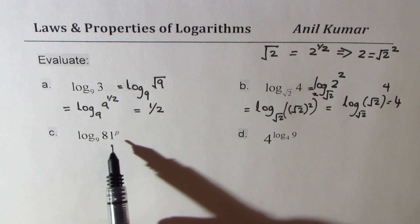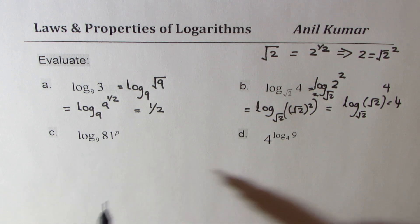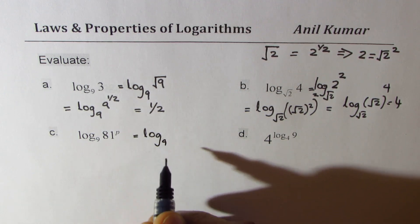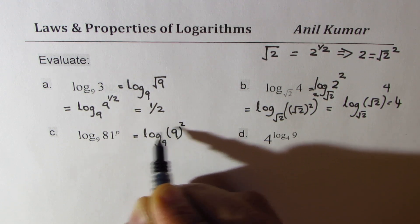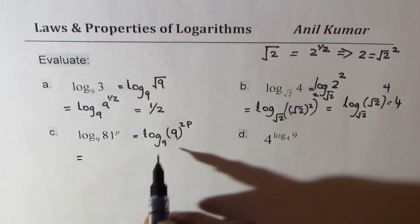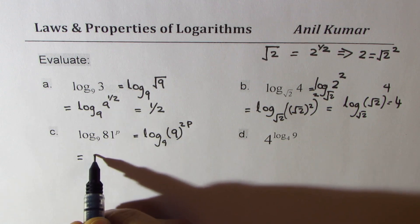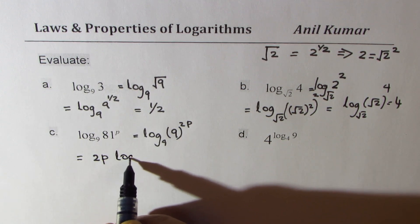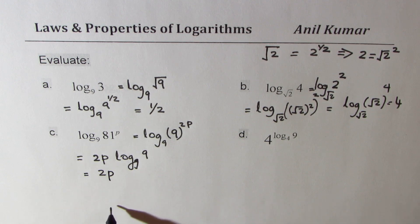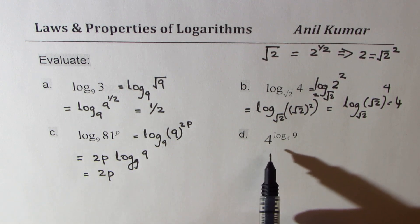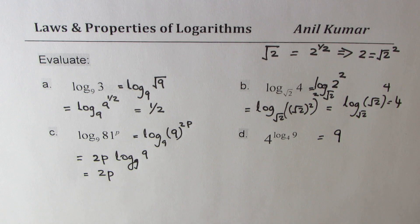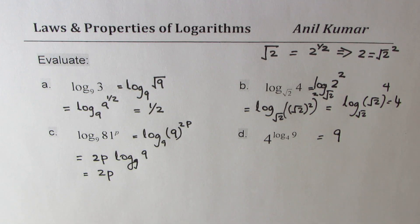Applying the power rule: log to the base 9 of 81 to the power of p. Write 81 as 9 squared, so this becomes log to the base 9 of 9 squared to the power of p. The exponents multiply to give 2p, and since log to the base 9 of 9 equals 1, the answer is 2p. The last one is a straightforward rule: 4 to the power of log to the base 4 of 9 equals 9.